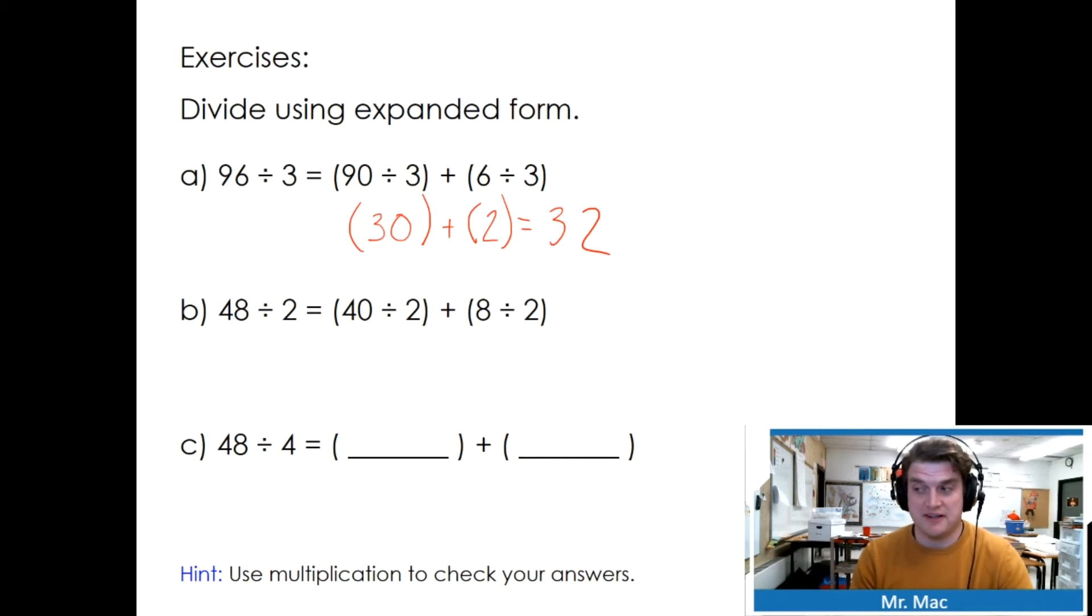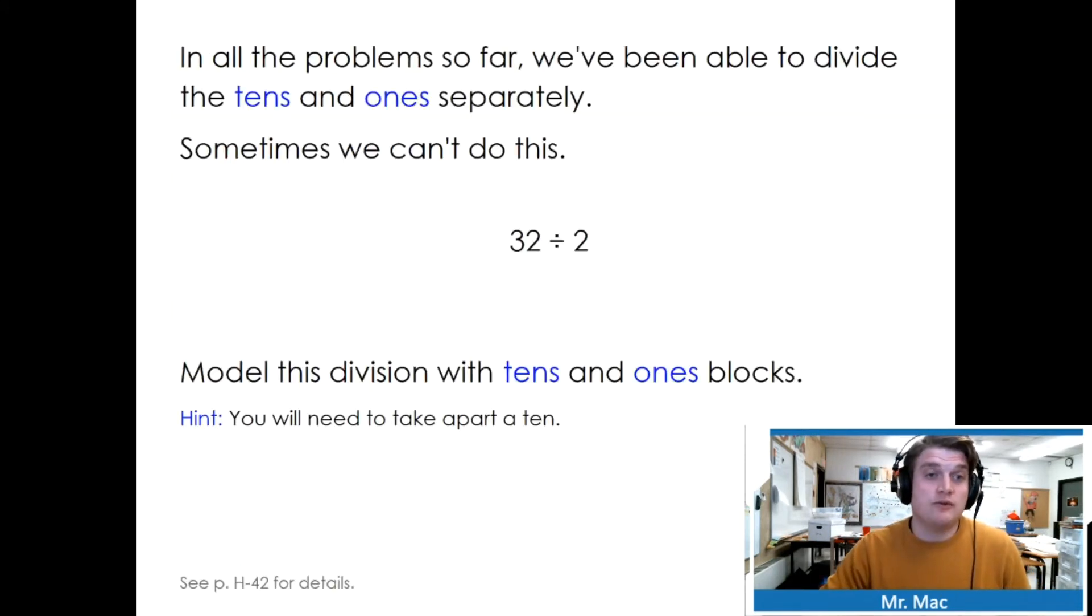Try the next couple by yourself. So we were asked to check our answer with multiplication. Let's quickly check: does 32 times 3 equal 96? Using vertical form, 3 times 2 is 6, 3 times 3 tens is 9 tens. And we get our answer. In all the problems so far, we've been able to divide the tens and ones separately.